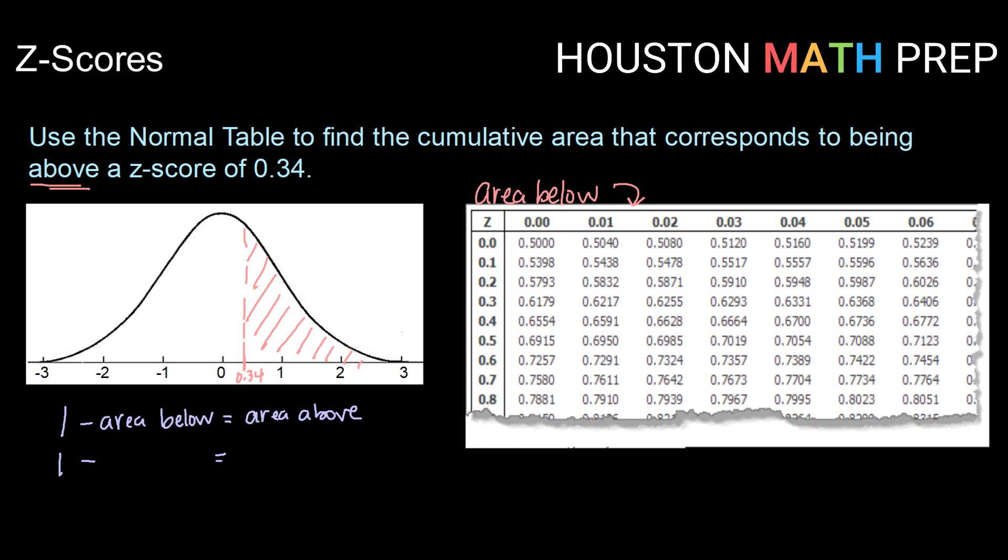So again, using our table 0.34, that means I'm going to go down to the 0.3 row and across to the 0.04 column. And I'm going to find the value that is at the intersection of that row and that column, which is 0.6331.